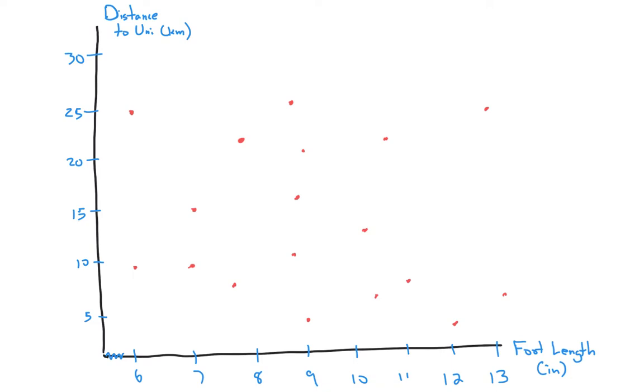So let me give you an example here with two variables that are unrelated. Your foot length in inches and the distance you travel to university in kilometers. As you can see from the graph here, there doesn't seem to be any particular relationship. In fact, I think you'd be pretty happy saying there's no relationship between foot length and the distance to the university from your house.